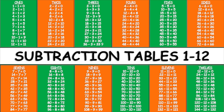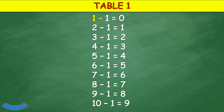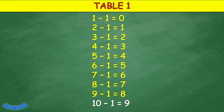Abacada Subtraction Tables 1 to 12. Table 1: 1 minus 1 equals 0, 2 minus 1 equals 1, 3 minus 1 equals 2, 4 minus 1 equals 3, 5 minus 1 equals 4, 6 minus 1 equals 5, 7 minus 1 equals 6, 8 minus 1 equals 7, 9 minus 1 equals 8, 10 minus 1 equals 9.